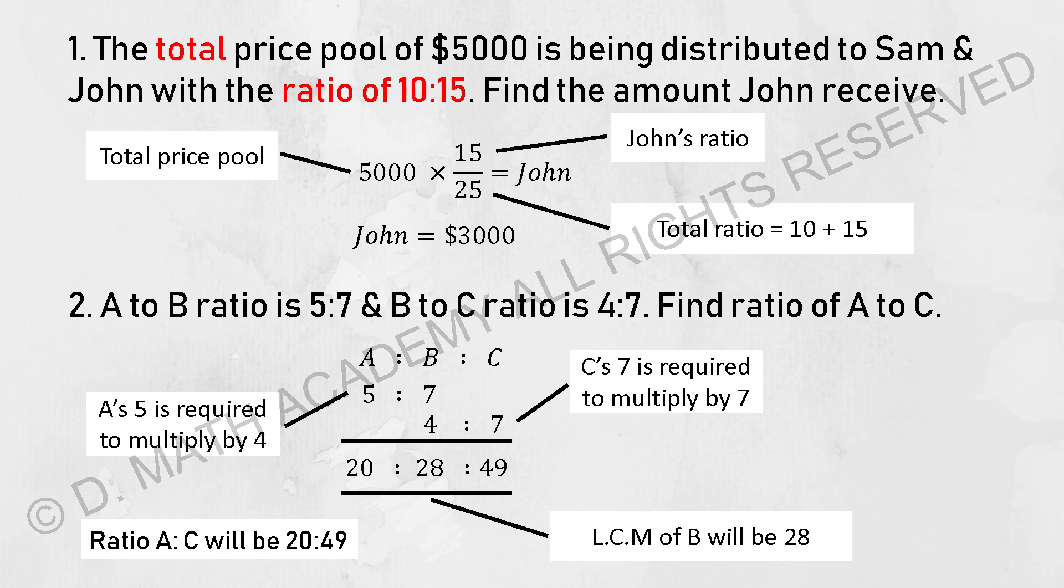So all three things in this row will be 20 to 28 to 49. Let's say if the question asks for the ratio of A to C, it will be 20:49. If they ask for B to C, it will be 28:49.